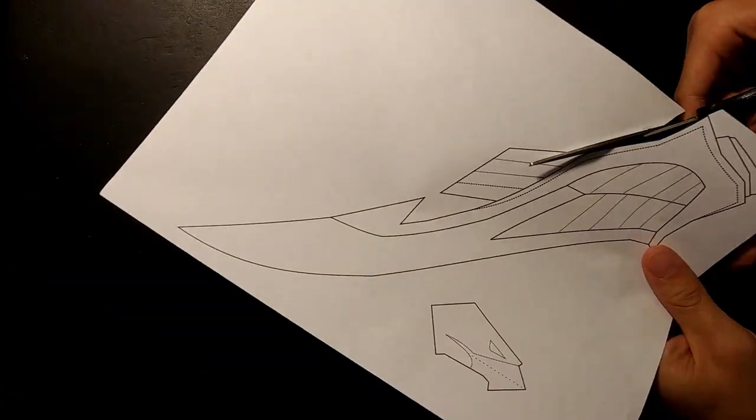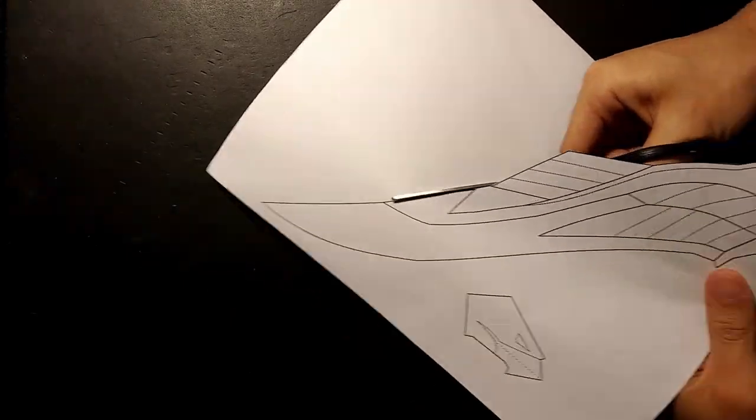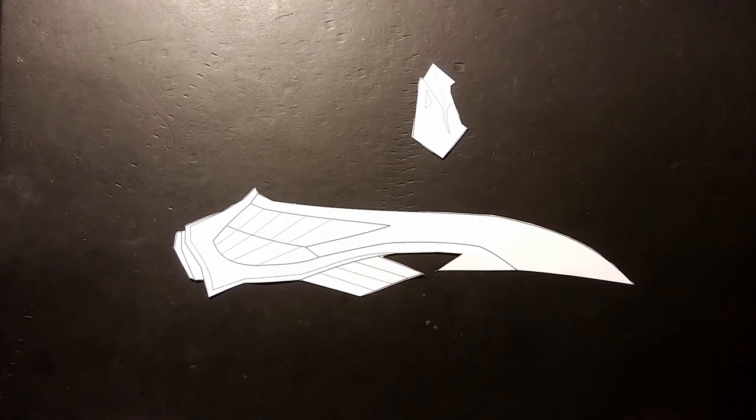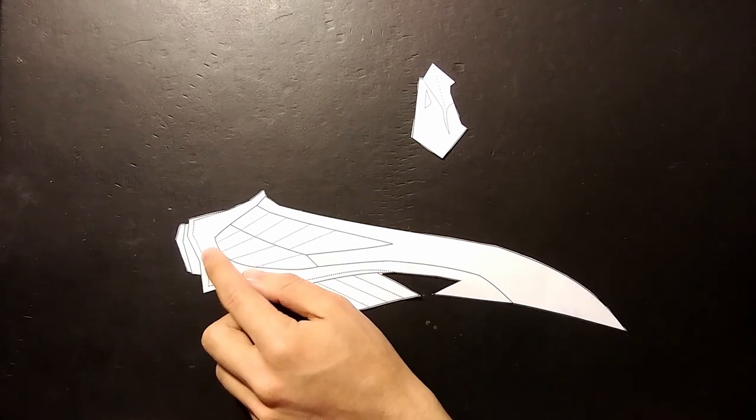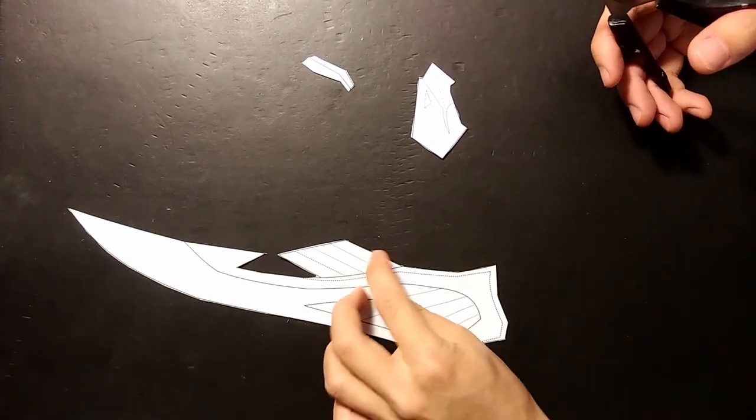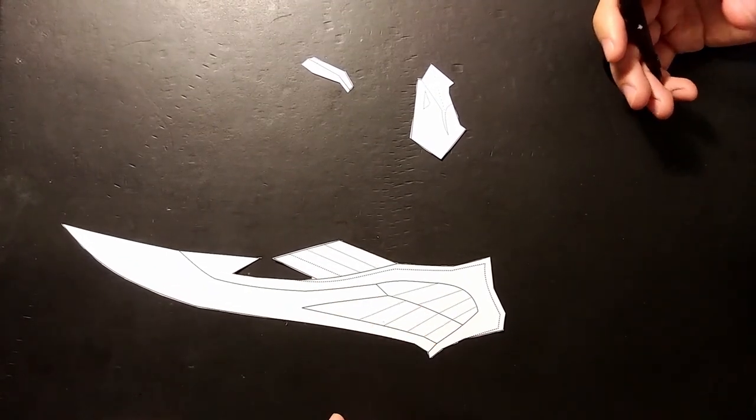Once I had that printed out, I could cut it out. You can actually cut off this bottom section here since that's just wrapping around the base of the handle, and you can cut off this back section too.